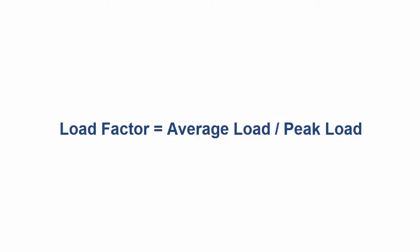The load factor is the ratio of average load divided by peak load. It is desirable to have the load factor as high as possible, meaning the peak load should be very close to the average load, so that peak power is not much higher than average power. For example, if your average power is 300 kilowatts and your peak power is 600 kilowatts, there is a 300 kilowatt difference.